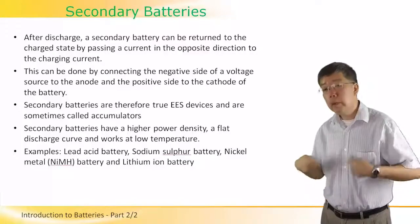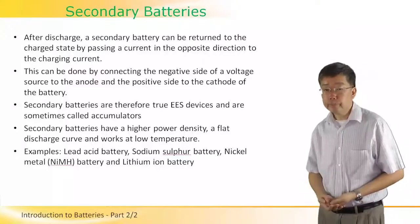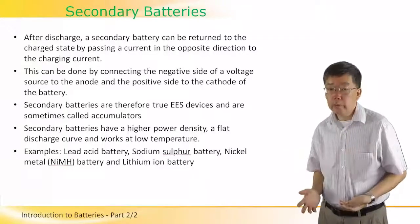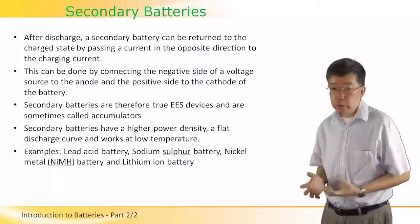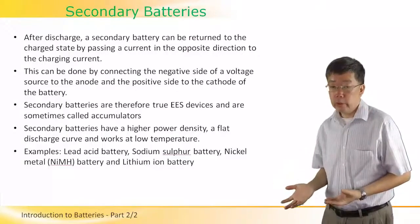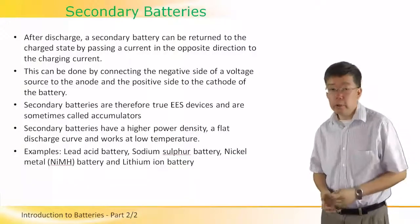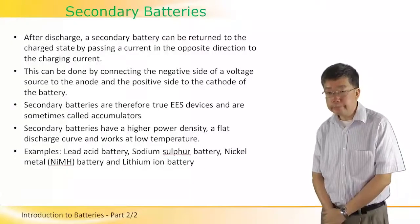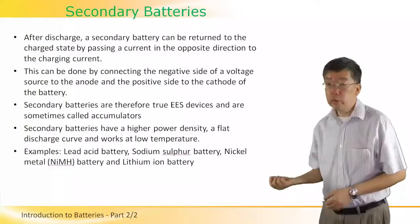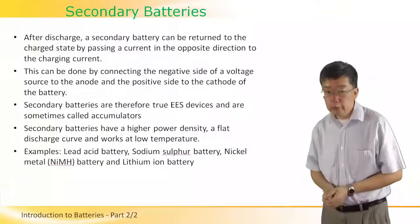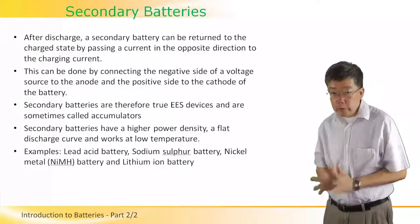We return the battery to its original charge state by simply passing a current in the opposite direction to the charging current. In practice, we connect the negative terminal of an external voltage source — which could be a power supply — to the anode, the negative electrode of the secondary battery, and connect the positive terminal to the cathode.